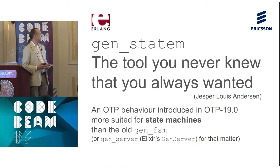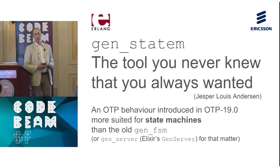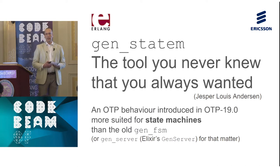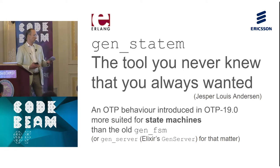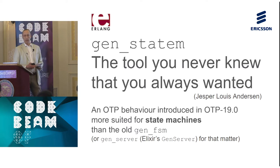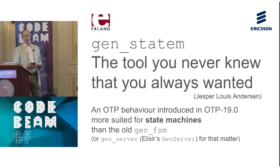About two years later, for OTP 19, I wrote gen_statem, a state machine behavior intended to replace gen_fsm, which had issues, so to say — everybody at least thought it had issues. gen_statem has already replaced gen_fsm for our SSH and SSL applications, which were written at the same time as OTP 19. The rewrite was successful — we got rid of some bugs, actually.